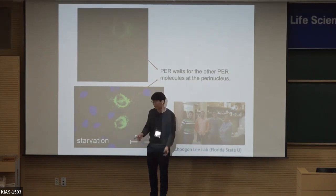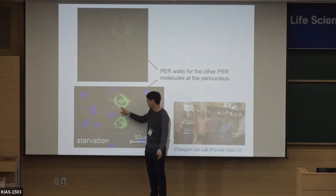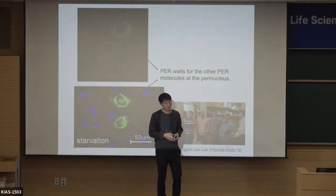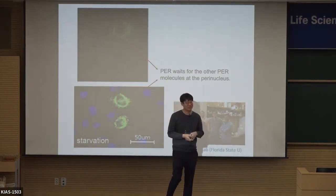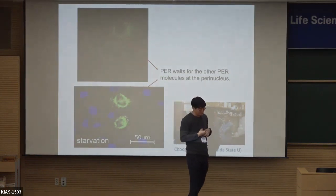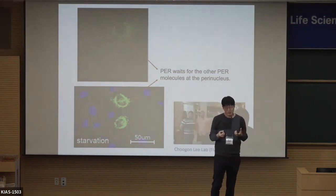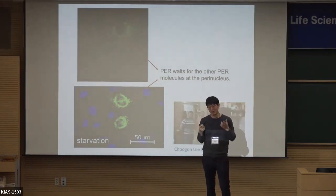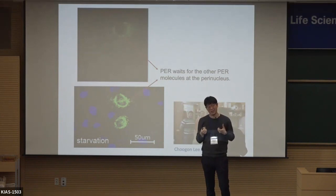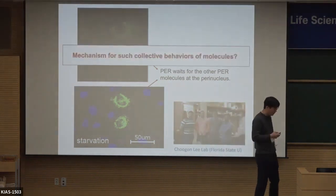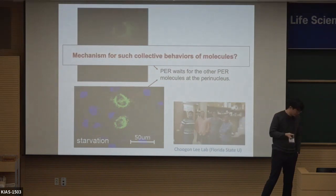They make this ring structure, and then suddenly they all enter the nucleus together. I was curious where this friendship between the molecules comes from — where this collective behavior of the molecules originates. That's my question.